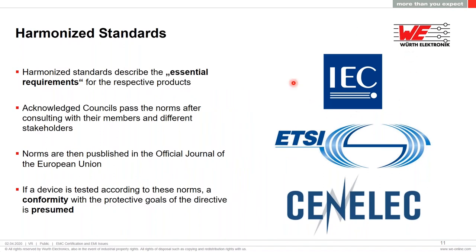The trial is to harmonize standards worldwide — to have some international organization that brings the essential requirements for every region and then spreads them. For example, CENELEC is the European organization that implements requirements from IEC. You also have ETSI, more connected to telecommunications. In other regions you have FCC for the US, CCC for China, and others as well.